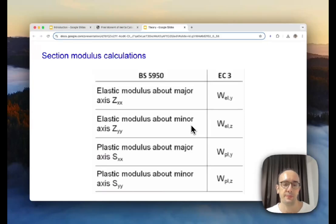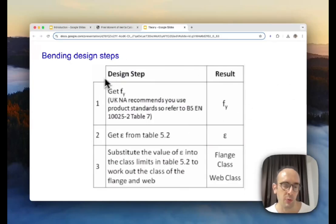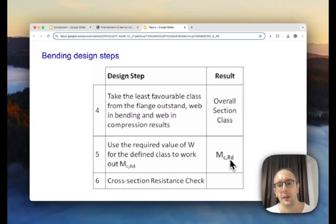And so our design steps if we want to recap our design steps for bending for Eurocodes is let's first get our strength so our FY which is the yield strength of the steel we then get this epsilon from table 5.2 so this is a calculated empirical number from this table and then we need to substitute this into our calculations to find our classification for both the flange and the web so we look at both of them they both have to be within the limit we take the least favorable class to get our overall section class from the flange and the web and then we use this to calculate our section modulus and eventually our resistance and then we do our check so that's all the steps we need to do in order to do our bending check.